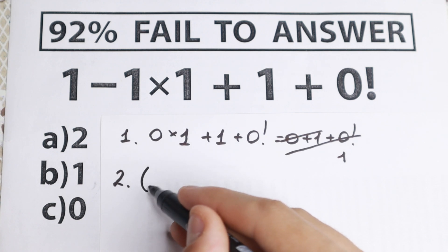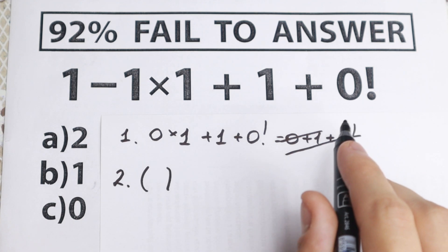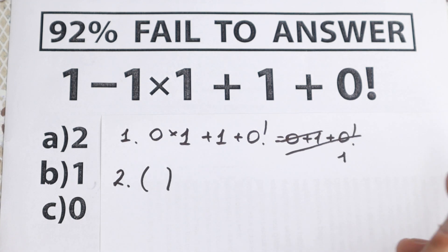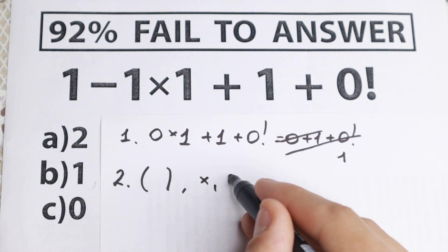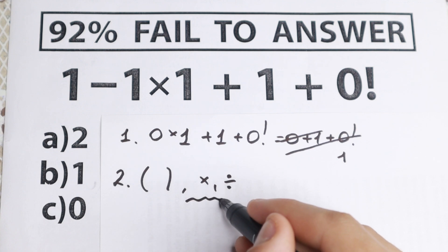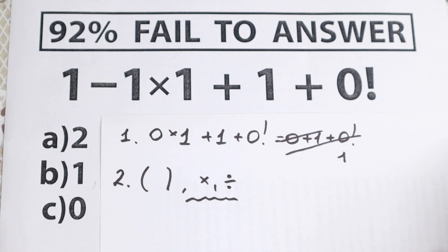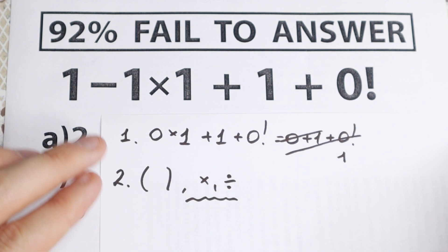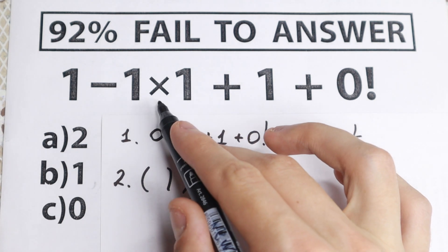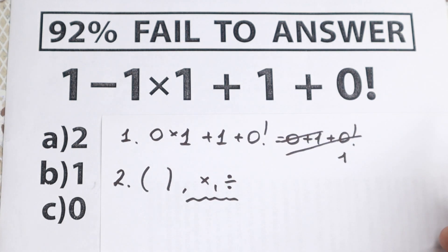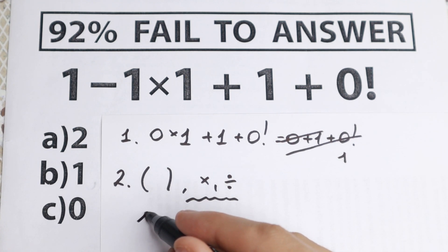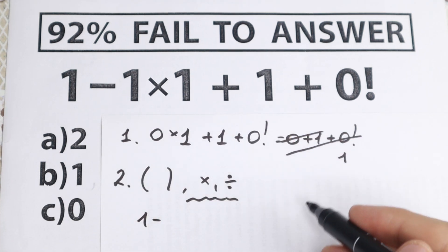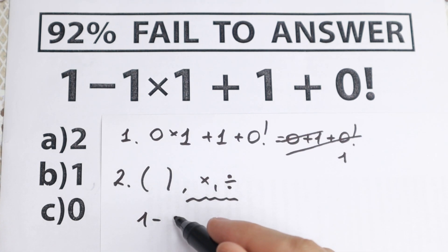How can we solve it correctly? First of all, we need to look for parentheses. If you don't have parentheses, great. Then we need to look for multiplication and division as our second step. As you can see right here, we have only multiplication, so we need to start with that multiplication.